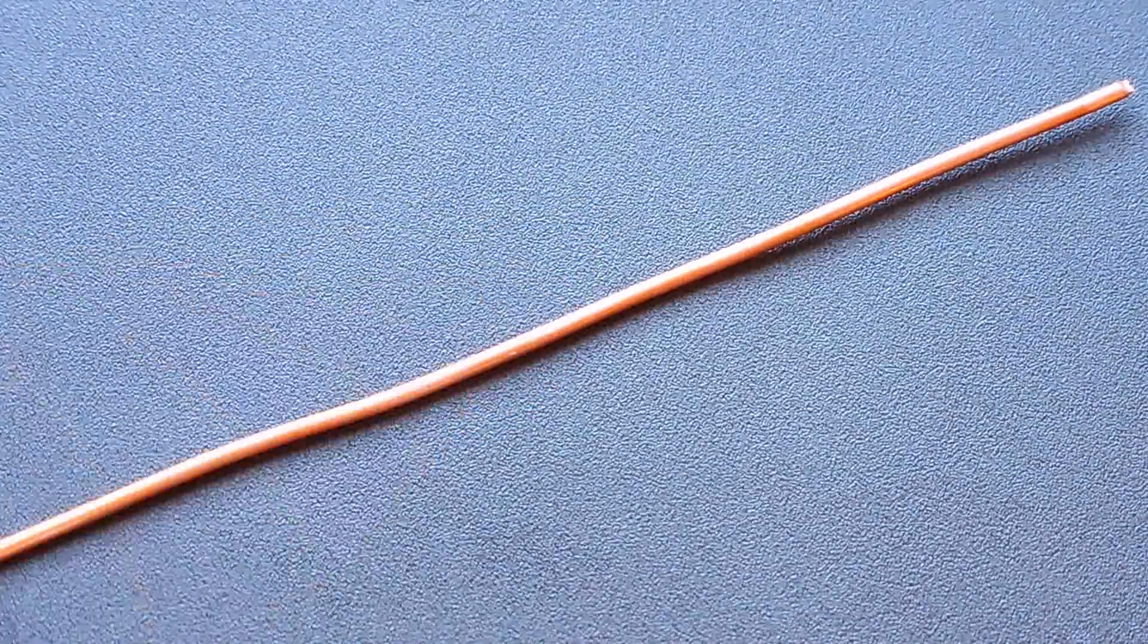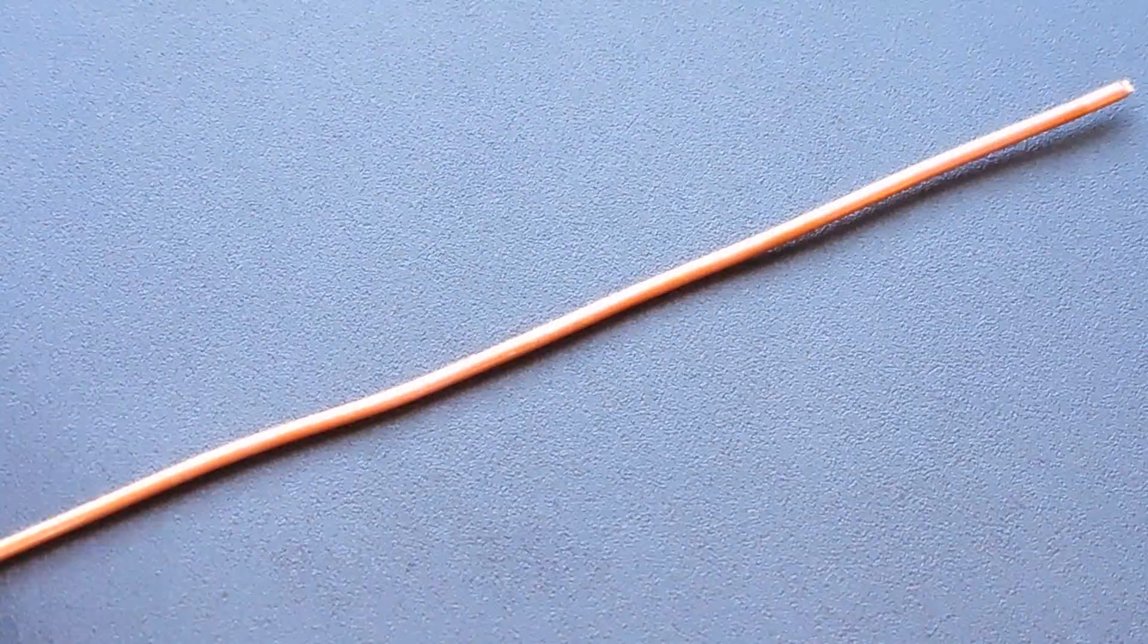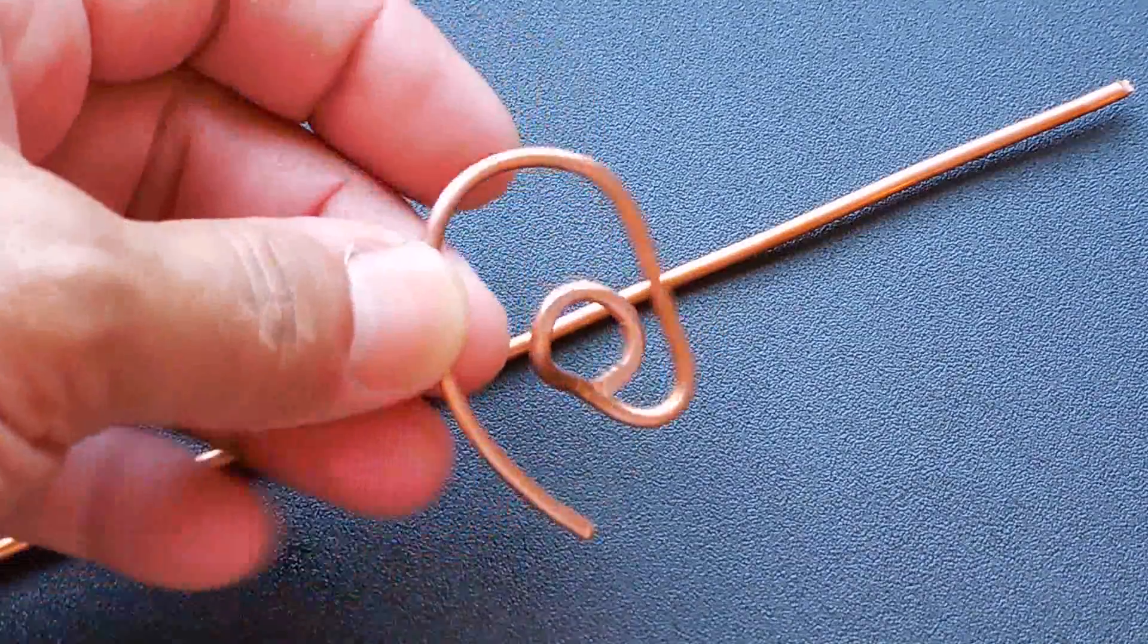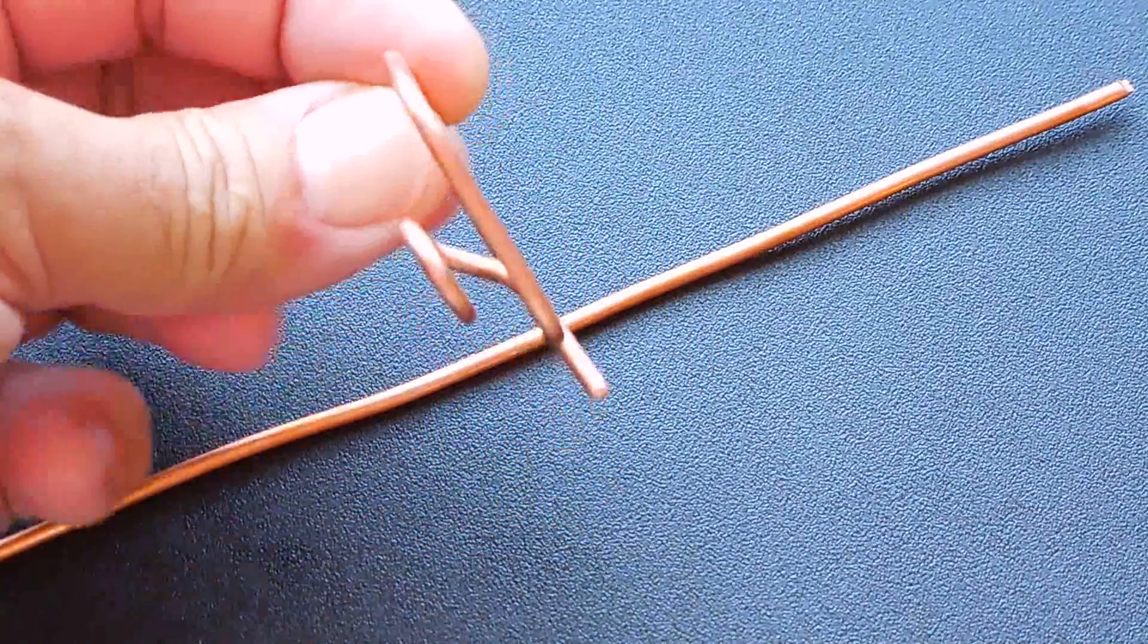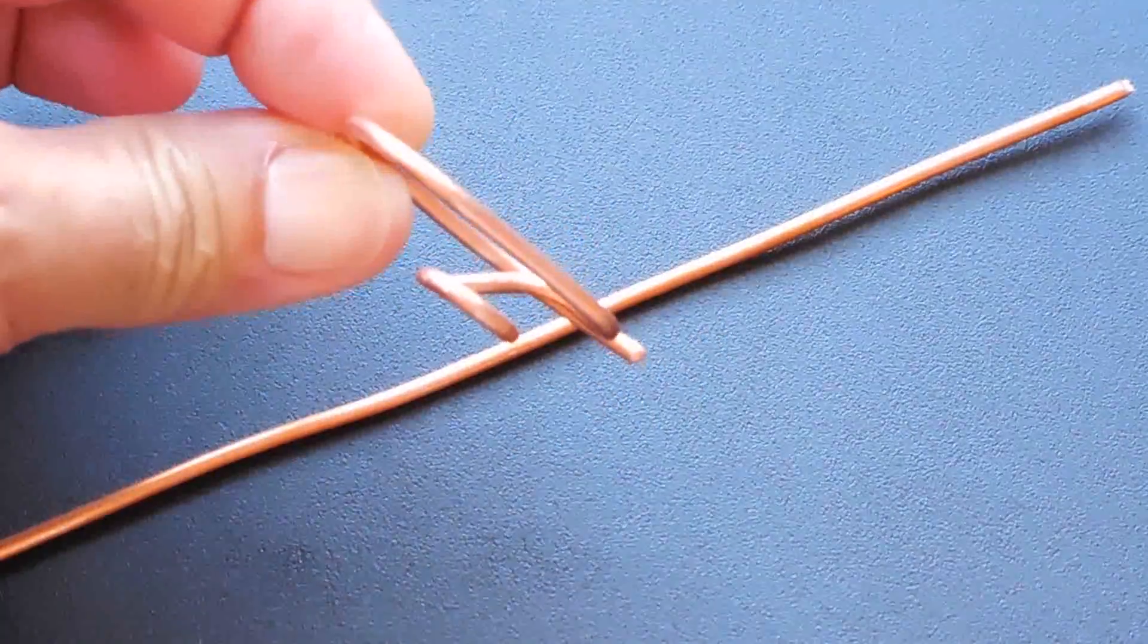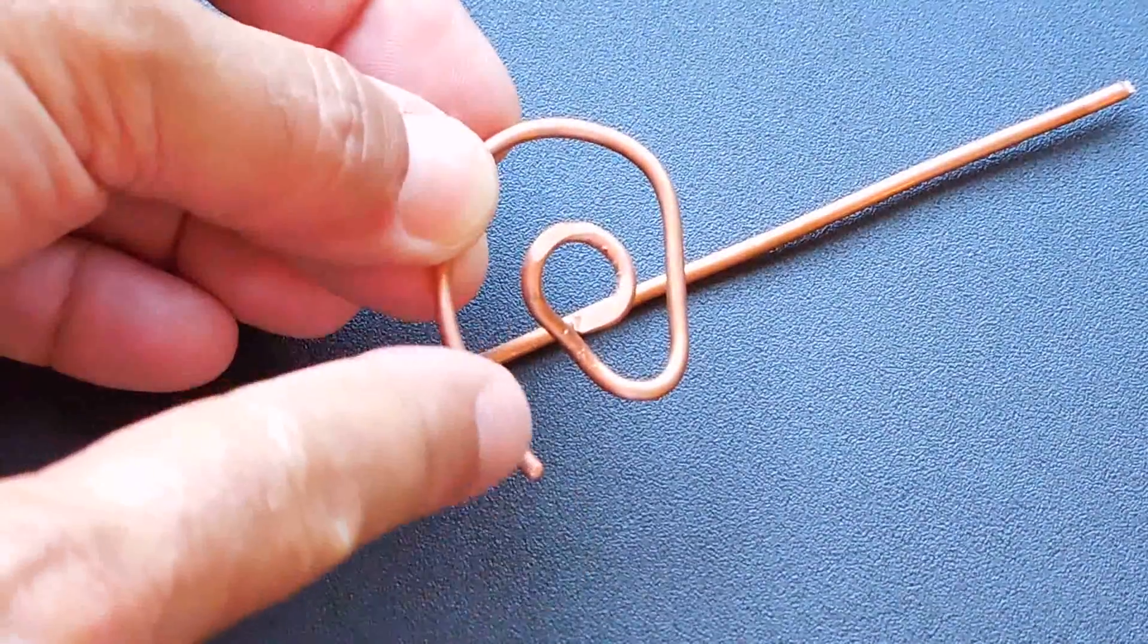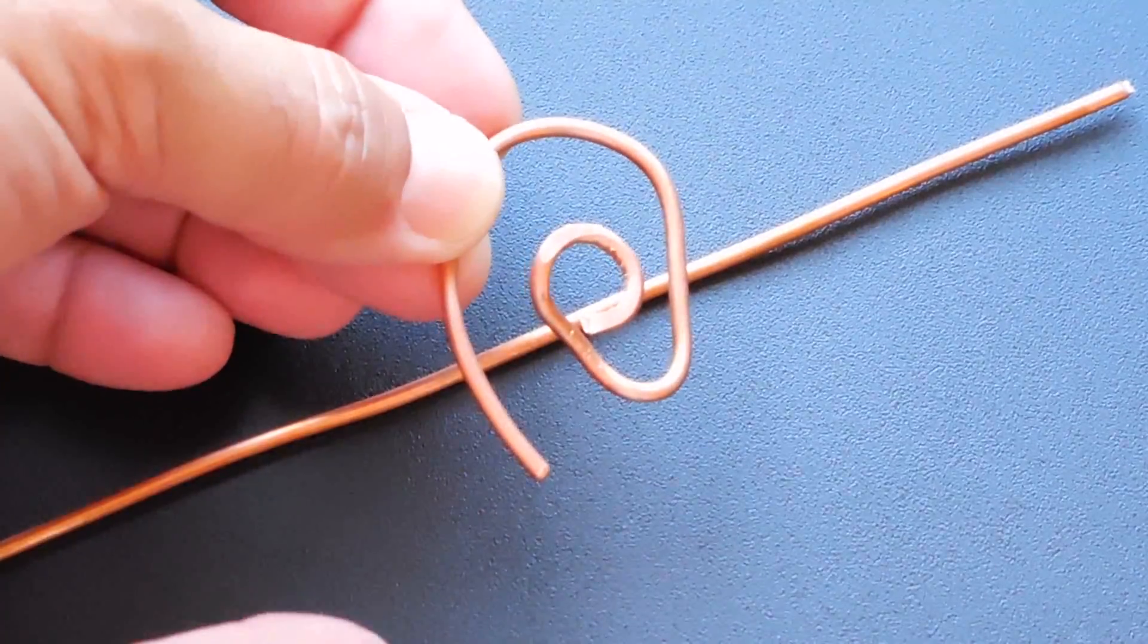You're going to take this wire and it's going to be bent around the outside of your ear like you see right here. When you're done bending it into the shape you see right here using needle nose pliers,